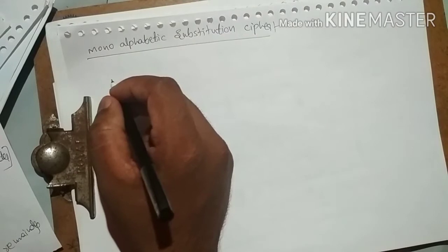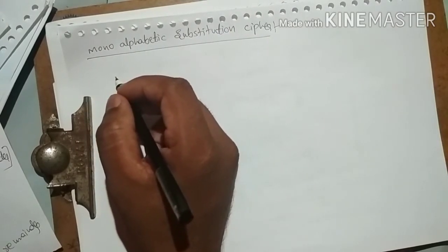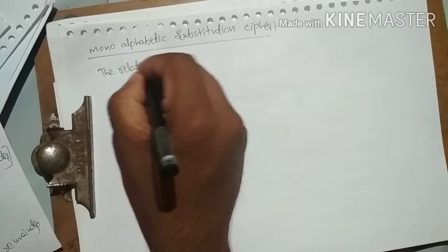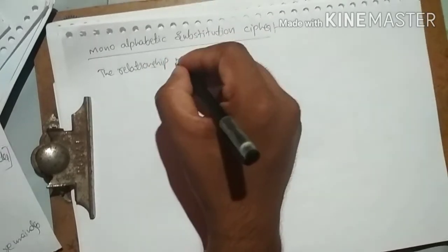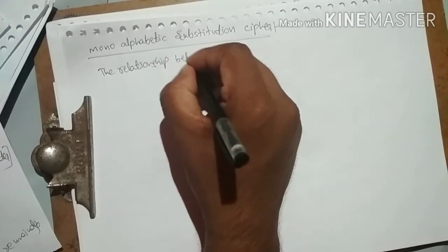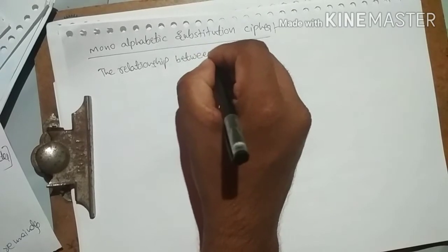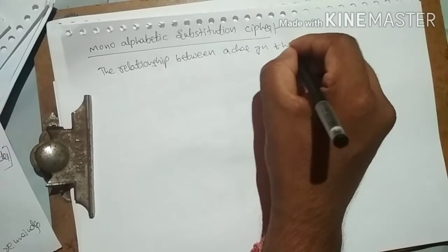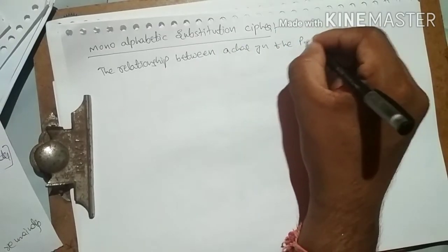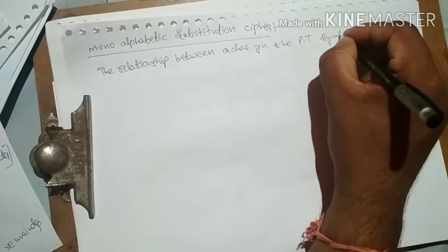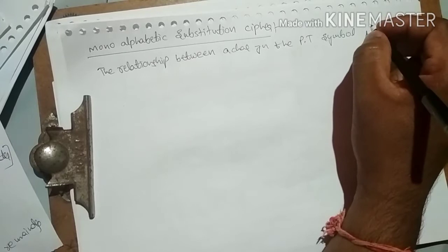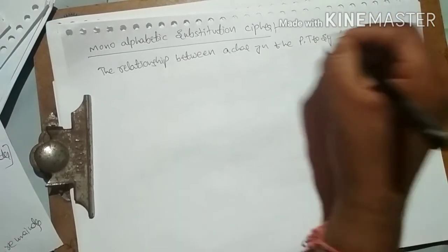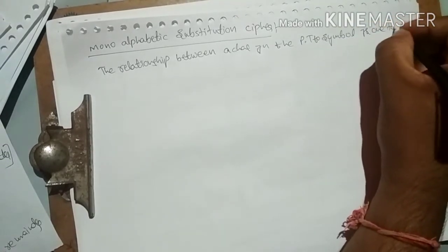In the mono-alphabetic substitution cipher, the relationship between a character in the plaintext symbol is one to one.